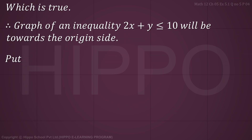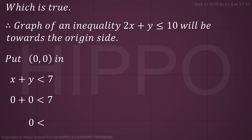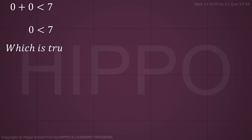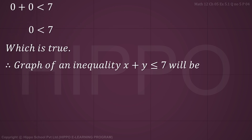Put (0, 0) in x plus y less than or equal to 7: 0 plus 0 equals 0, which is less than 7 — this is true. So the graph of the inequality x plus y less than or equal to 7 will be towards the origin side.